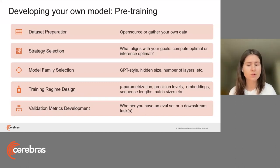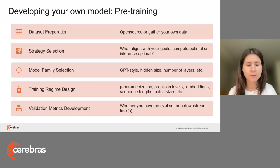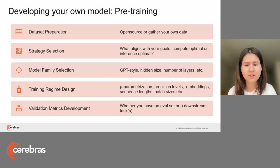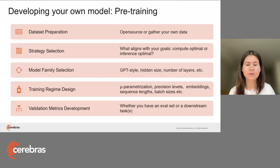Then we need to think about model family selection. Most people would select GPT-style networks, though there are others like BERT, T5, and computer vision models. Depending on your application, specify which model you want to train. Then we select the architecture — there are many available configs from tiny, small, medium to large and extra-large. You can select one of the existing configs and go to the Cerebras Hugging Face page to get configs for 111 million up to 13 billion parameter models, or you can explore yourself — make it wider or deeper and see what serves your specific needs best.